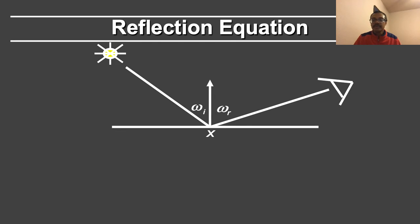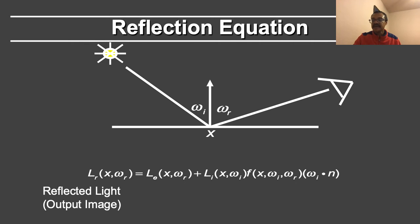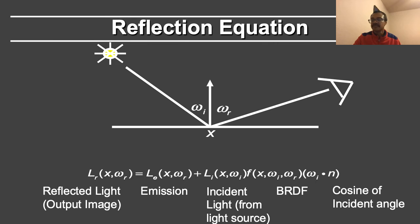We will review the reflection equation now. Consider a spatial location x, incident direction omega_in, and reflected direction omega_r. The reflected light or output radiance at spatial location x and outgoing direction omega_r is equal to the emission from light sources plus the incident light from the light source times the BRDF of the surface and the cosine of the incident angle.